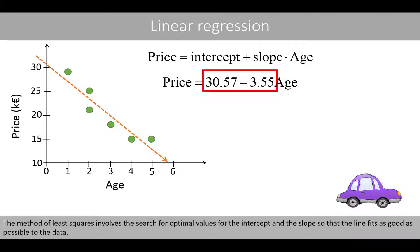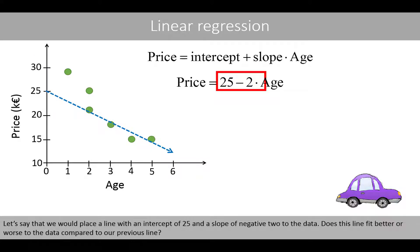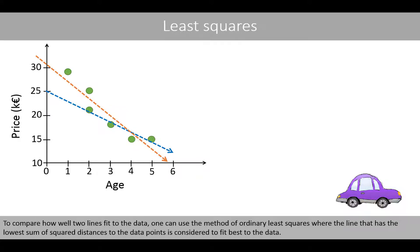The method of least squares involves the search for optimal values for the intercept and the slope, so that the line fits as good as possible to the data. If we replace the line with an intercept of 25 and a slope of negative 2, does this line fit better or worse to the data compared to our previous line? To compare how well two lines fit to the data, one can use the method of ordinary least squares, where the line that has the lowest sum of square distances to the data points is considered to fit best to the data.